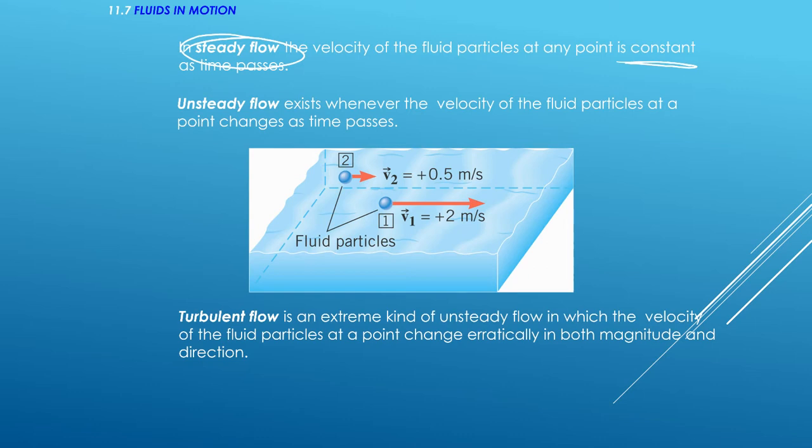If you actually move that speed meter around, it'll change a little bit. This is because of unsteady flow. Whenever the velocity of the particles can actually change. So this picture is kind of showing that maybe a fluid particle over here has a speed of half a meter per second, but a fluid particle here is two. We'll see a little bit later why this happens.